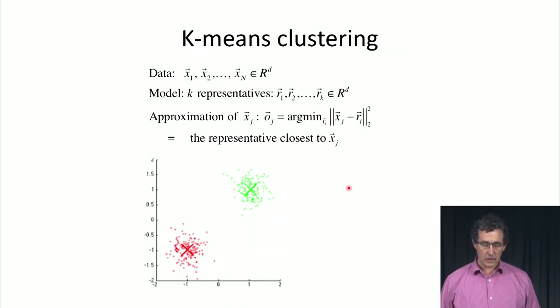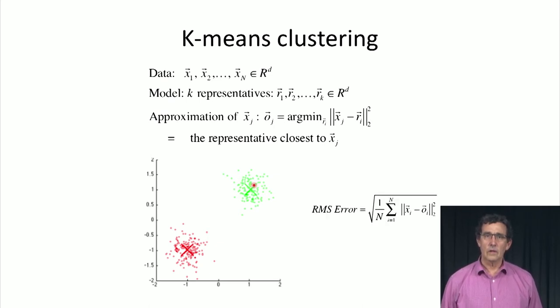K-means clustering is similar in its approach, but the representation now is just a finite set of points instead of a line. Every other point in the data is mapped to the closest point. These points we call representatives or centroids. We're minimizing the same root mean squared error.